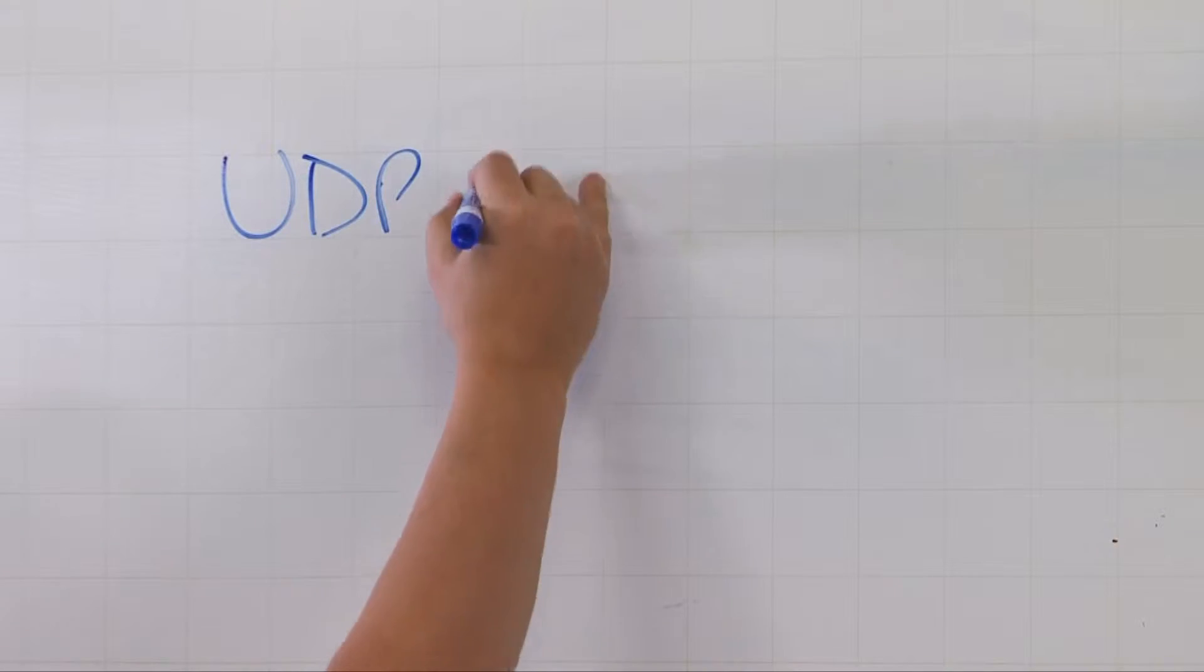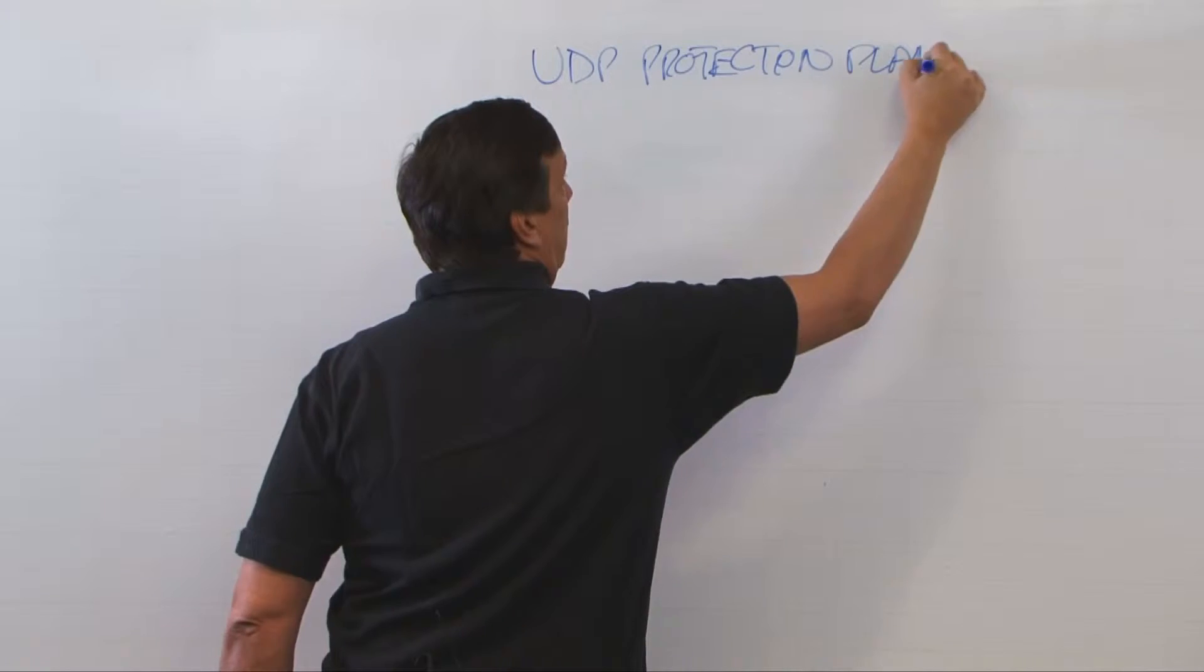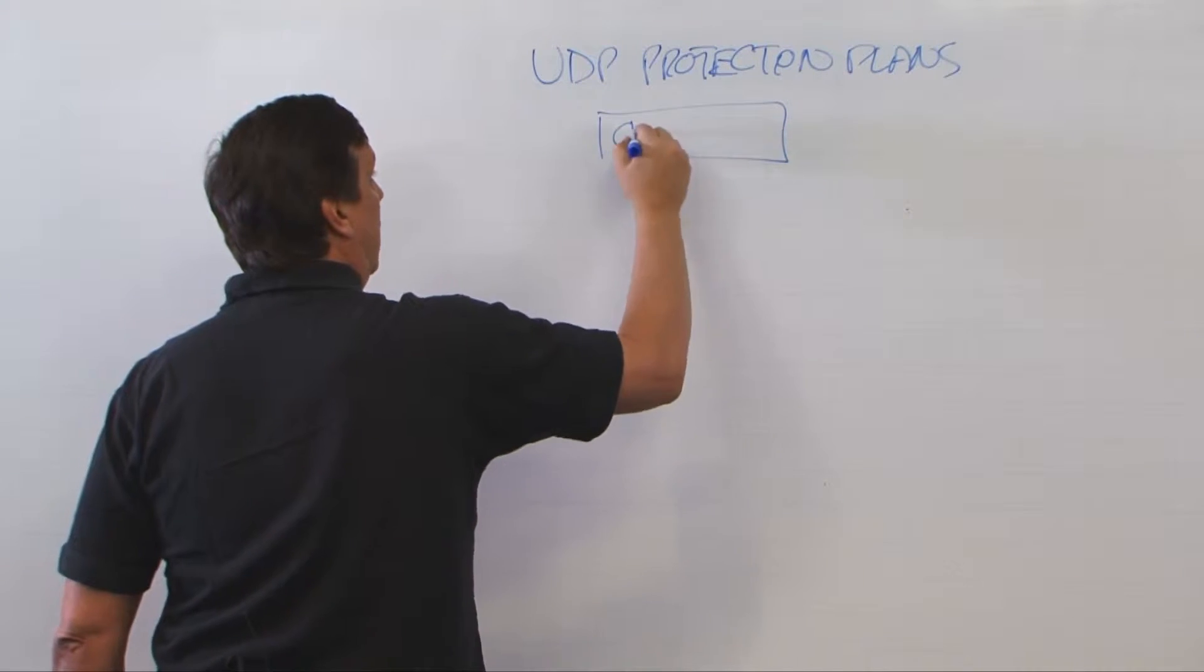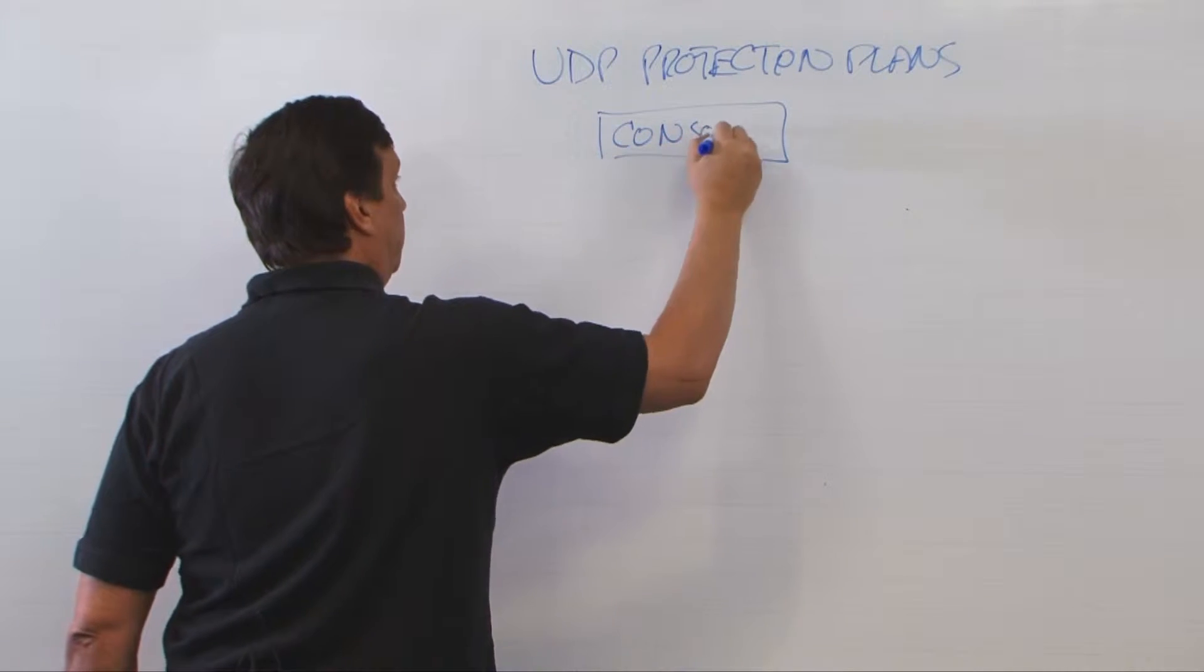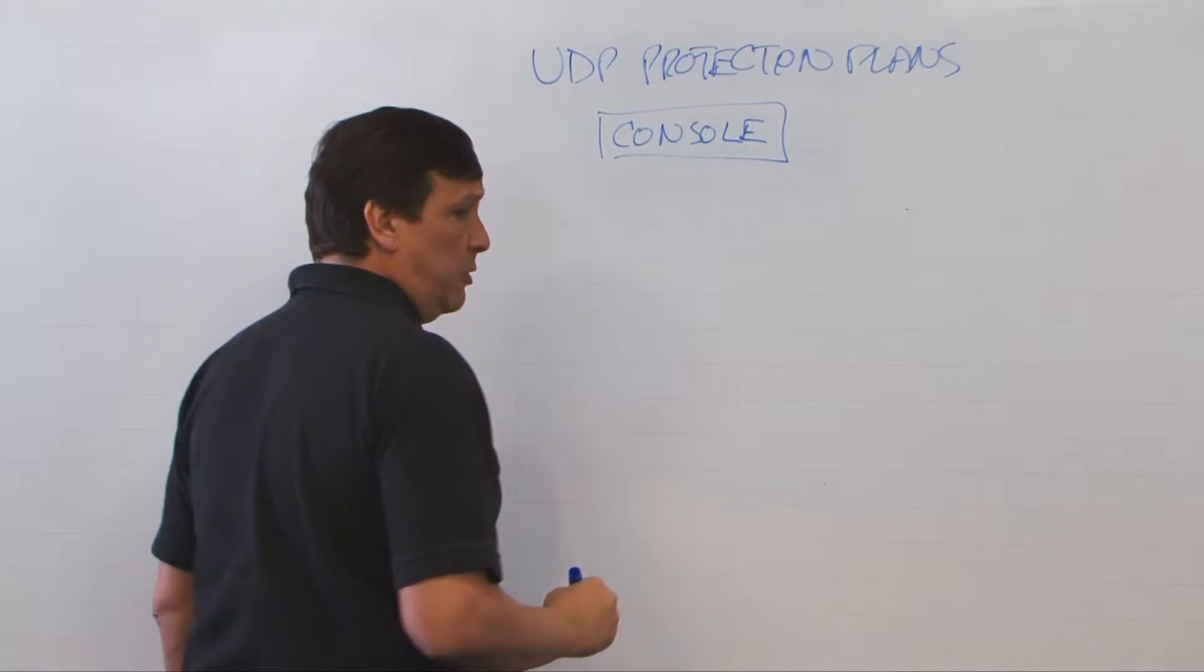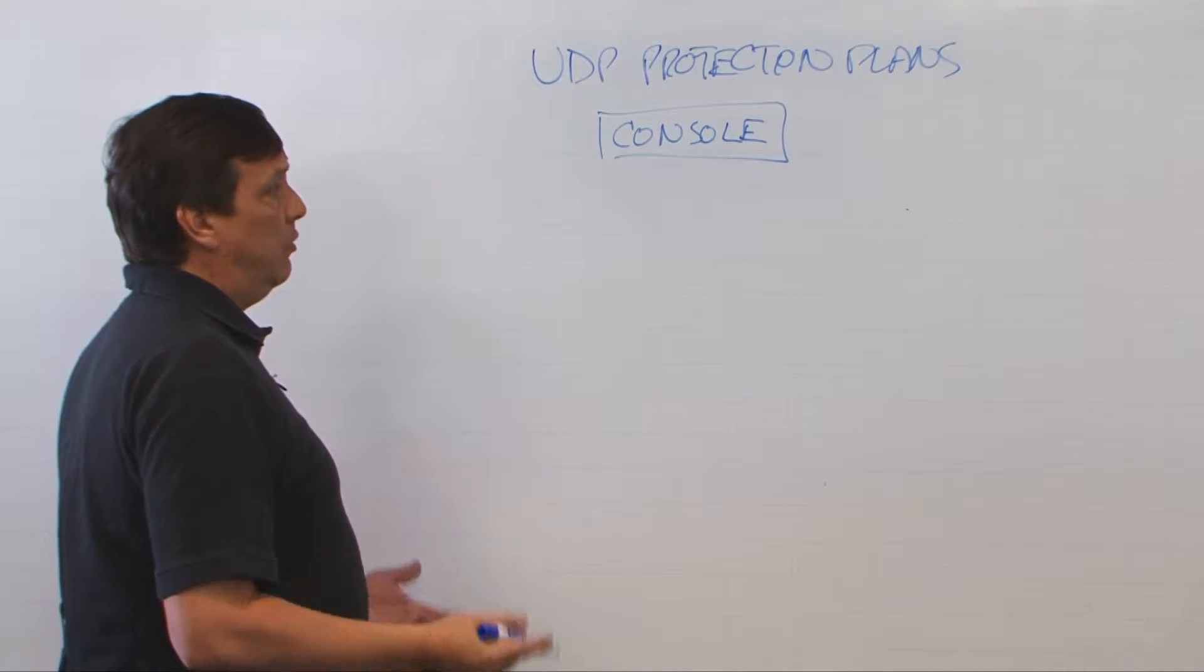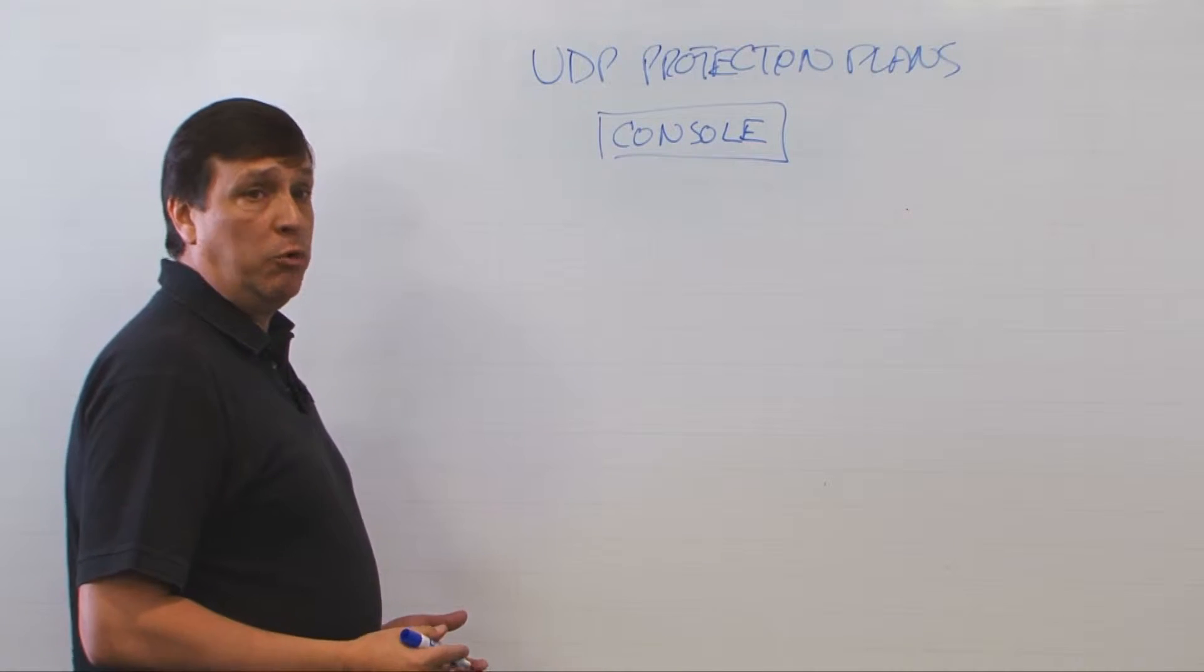So if we talk about UDP protection plans, everything starts from the main console in UDP. As I mentioned before, there's a series of tasks that need to happen with our final goal, obviously backing up or replicating data.